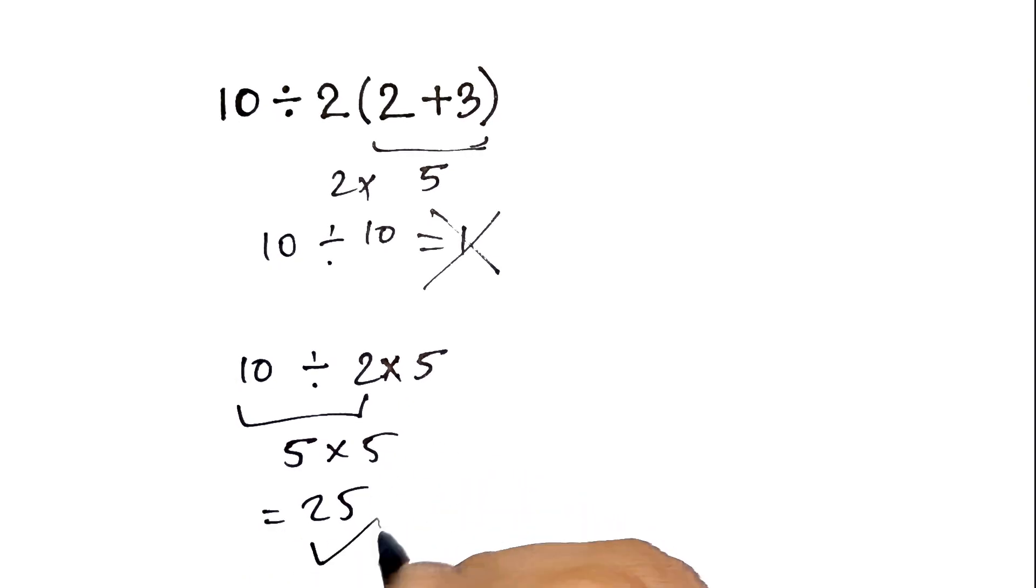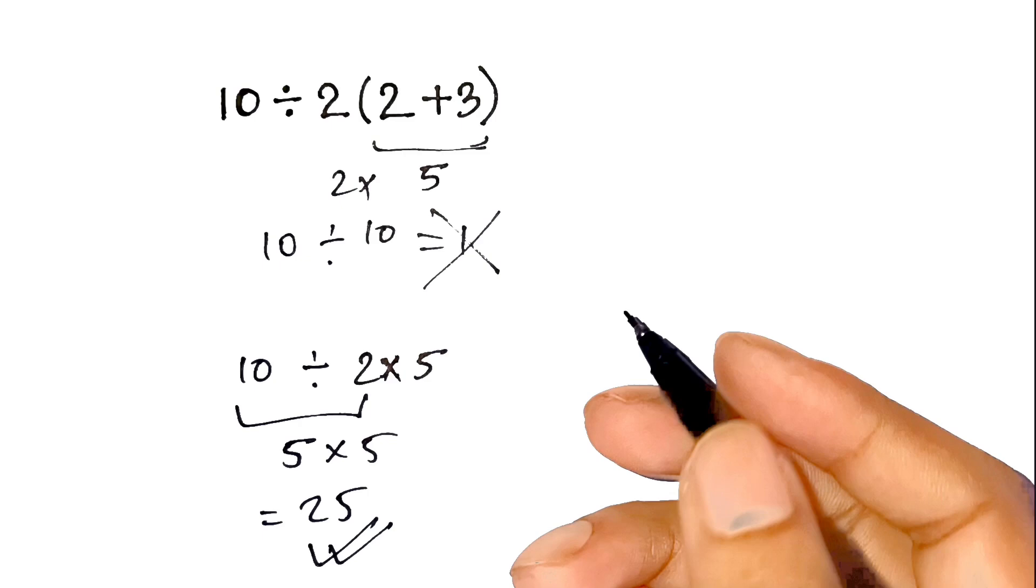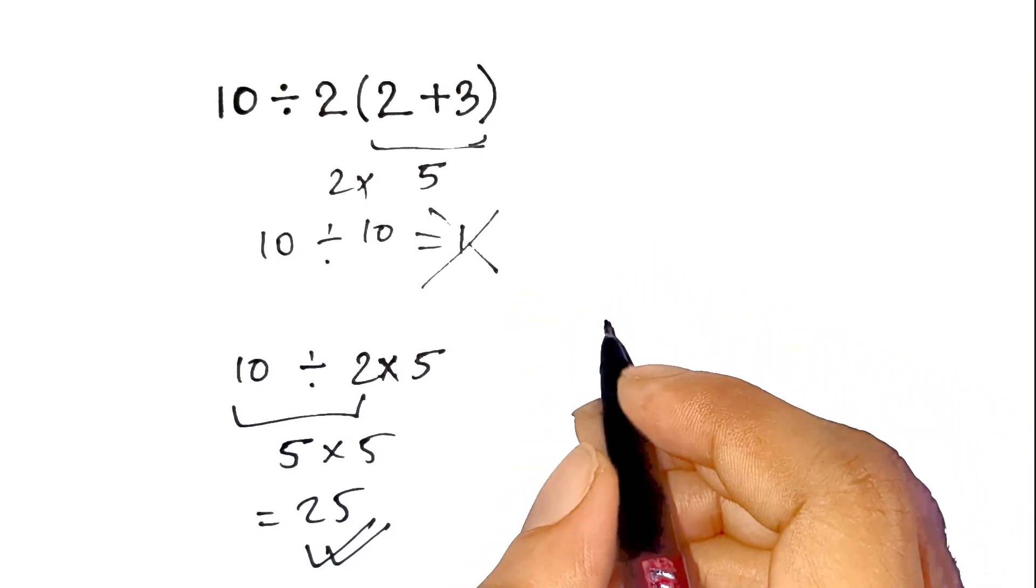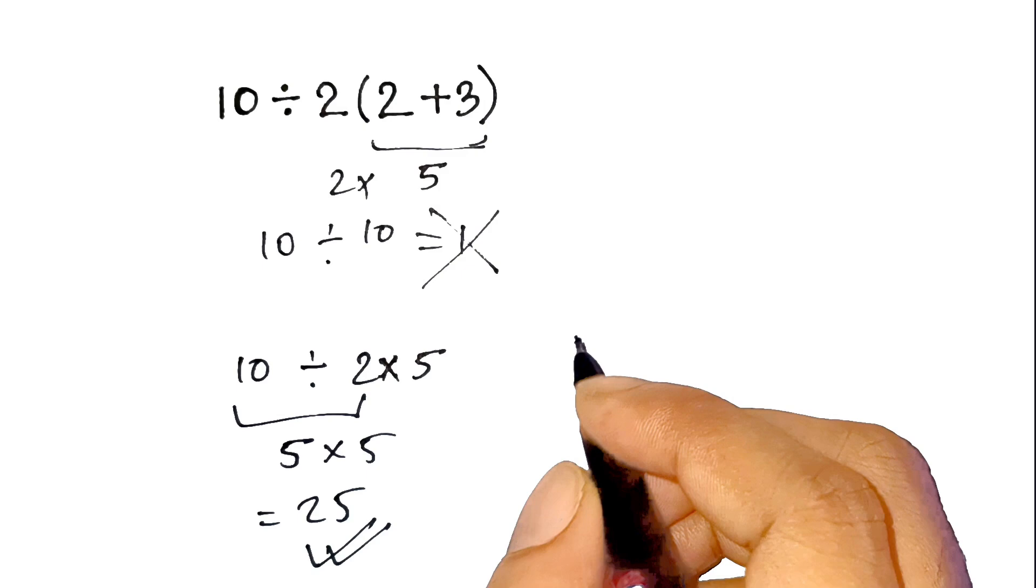So the correct answer is 25, not 1. Pretty surprising, right? Most people get tricked by that little bracket next to the 2, assuming you multiply first.